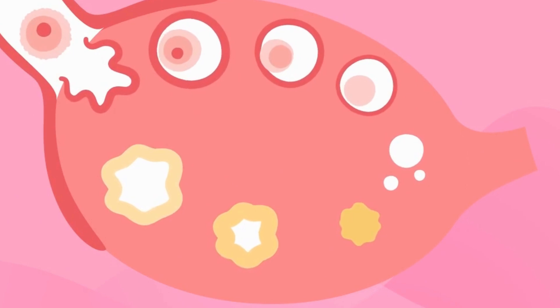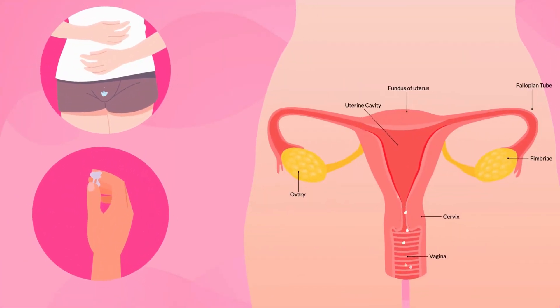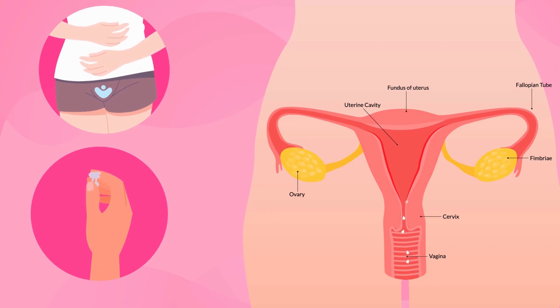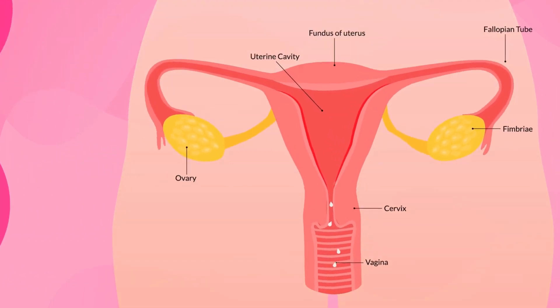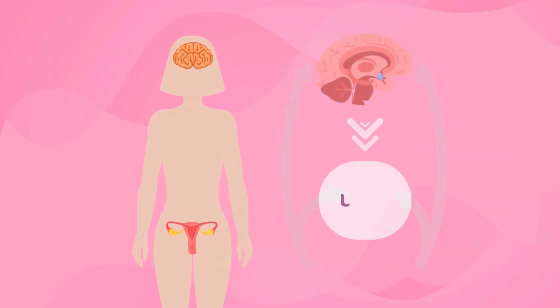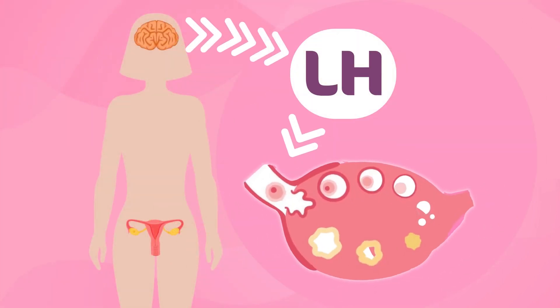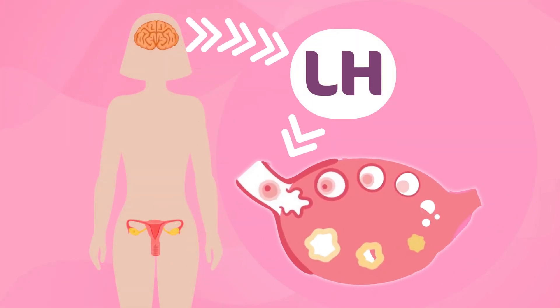As estrogen levels increase further, the cervical fluid changes in ways that can be easily recognized. Inside, the estrogen is stimulating the lining of the uterus, the endometrium, to grow. A high level of estrogen signals another hormone to be released from the brain — luteinizing hormone, or LH. LH causes one of the mature follicles to rupture and release the egg, or ovum.